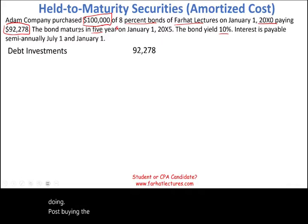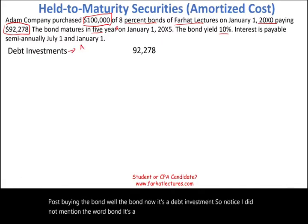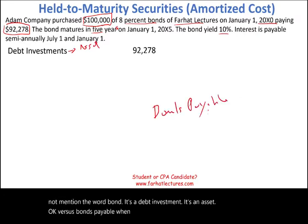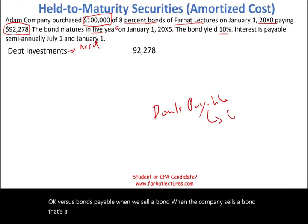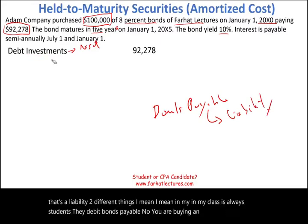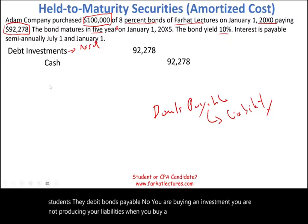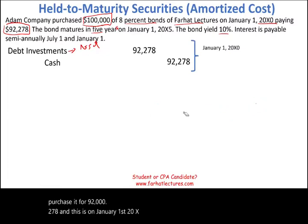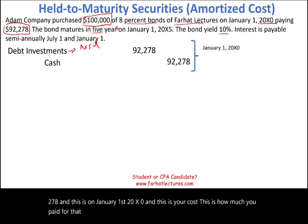First, buying the bond. Note that it is a debt investment — I did not say bonds payable. It's an asset. Versus bonds payable, which is a liability when a company sells a bond — two different things. In my classes, students always debit bonds payable — no. You are buying an investment; you are not reducing your liabilities. You debit debt investment and credit cash for $92,278. This is your cost, recorded just like any other asset at its purchase price.